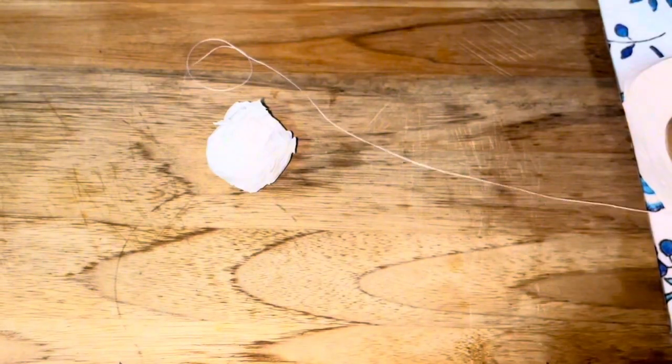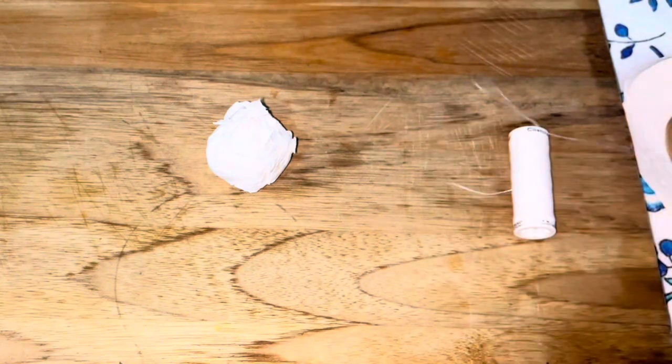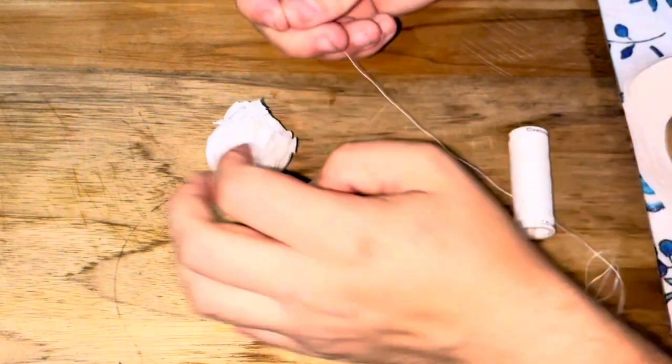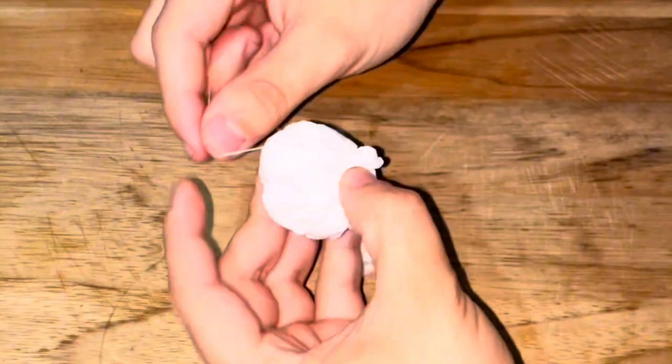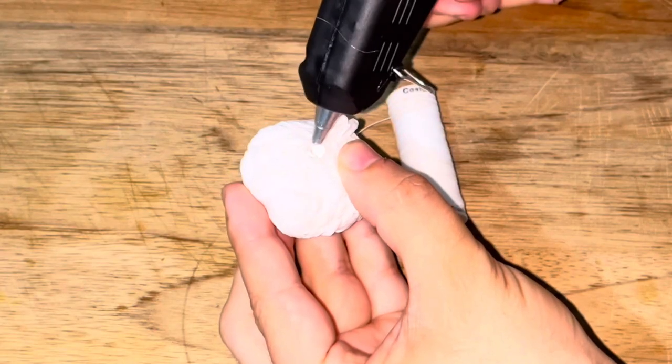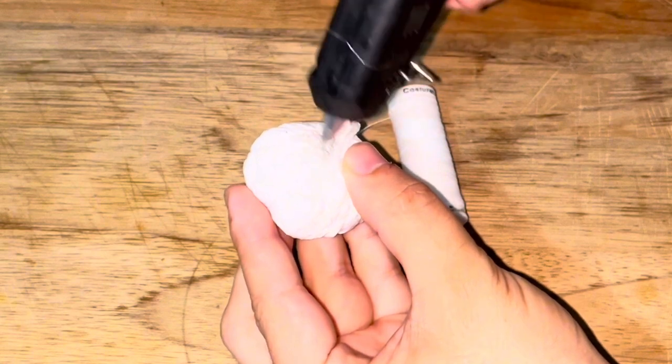After making the paper ball, grab a thread and wrap it around the ball to firm it. To speed things up, I used hot glue. It will quicken the process, helping to secure the thread.